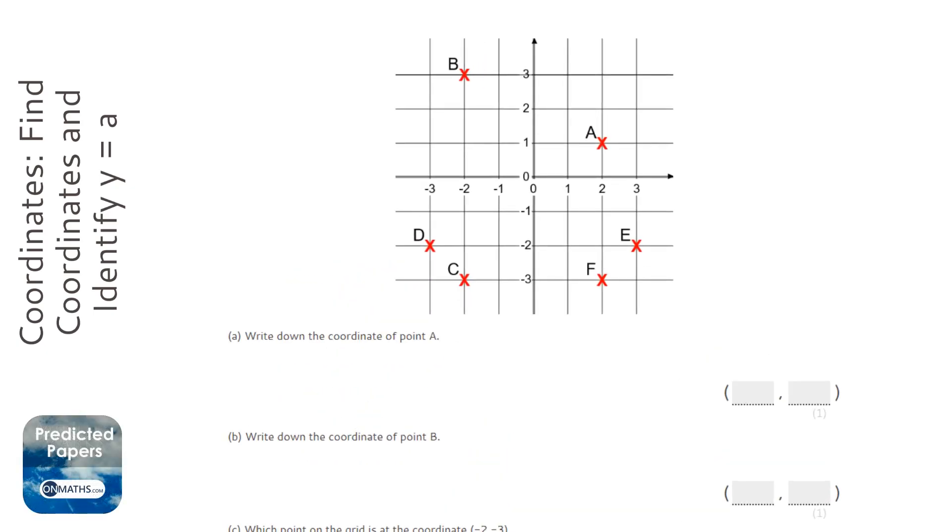This question is about coordinates and the biggest mistake with coordinates is getting them the wrong way around. Point A is either going to be (2,1) or (1,2). The way of remembering it is you always go across first and then up - you go along the corridor, up the stairs. You always read off the x-axis and then the y-axis. So the coordinate is 2 because we go two to the right from the middle, and 1 because we go one up.